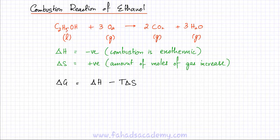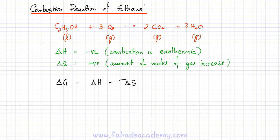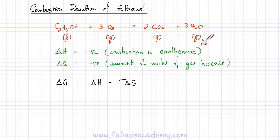Let's take the example of a combustion reaction of ethanol. In the balanced equation, ethanol in liquid state combusts with oxygen to produce carbon dioxide and water vapor. This is an exothermic reaction — all combustion reactions are exothermic — so it would tend to be more spontaneous. Looking at entropy change, there are fewer gaseous molecules in the reactants and more in the products, so the amount of gas is increasing, meaning delta S is positive.